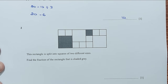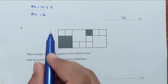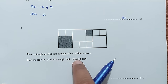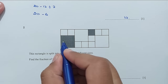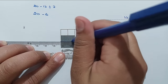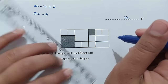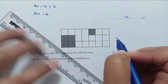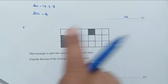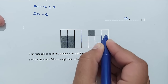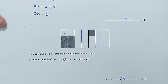Question number 2: this rectangle is split into squares of two different sizes. Find the fraction of the rectangle that is shaded gray. So counting the shaded squares: 1, 2, 3, 4, 5. Five are shaded. The total squares are 14 plus 7, which is 21. So 5 out of 21 is shaded.